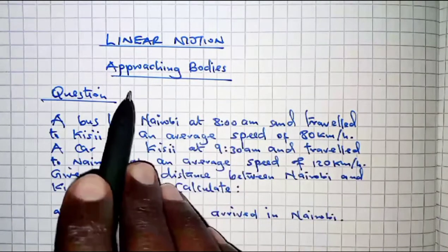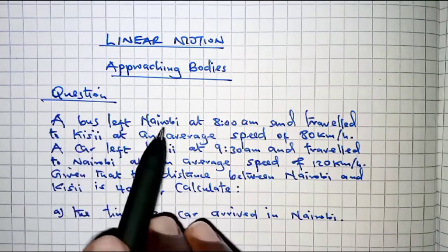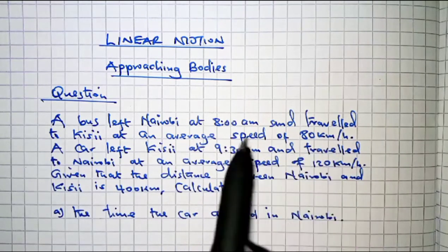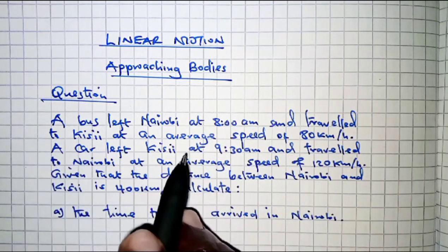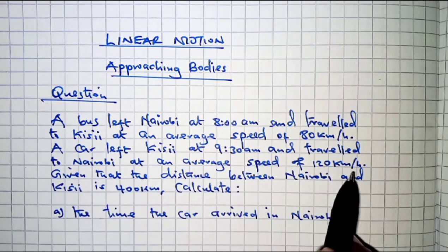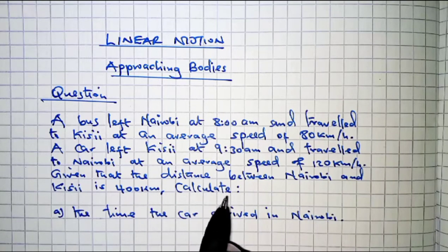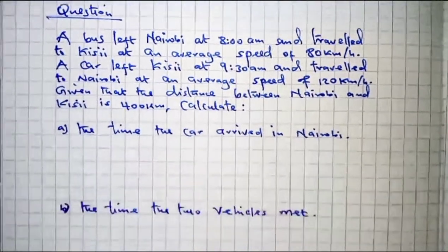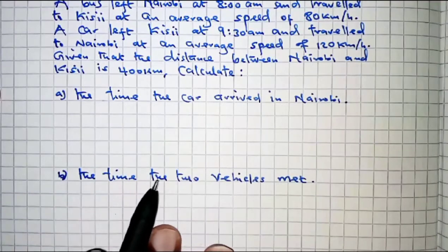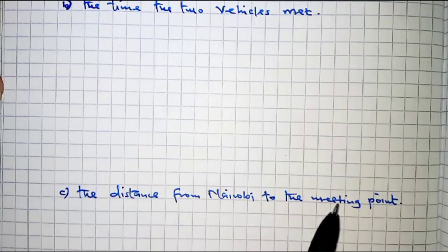The question today is on linear motion and we are going to talk about approaching bodies. A bus left Nairobi at 8 a.m. and travelled to Kisii at an average speed of 80 km per hour. A car left Kisii at 9:30 a.m. and travelled to Nairobi at an average speed of 120 km per hour. Given that the distance between Nairobi and Kisii is 400 km, calculate: part A, the time the car arrived in Nairobi; part B, the time the two vehicles met; and part C, the distance from Nairobi to the meeting point.